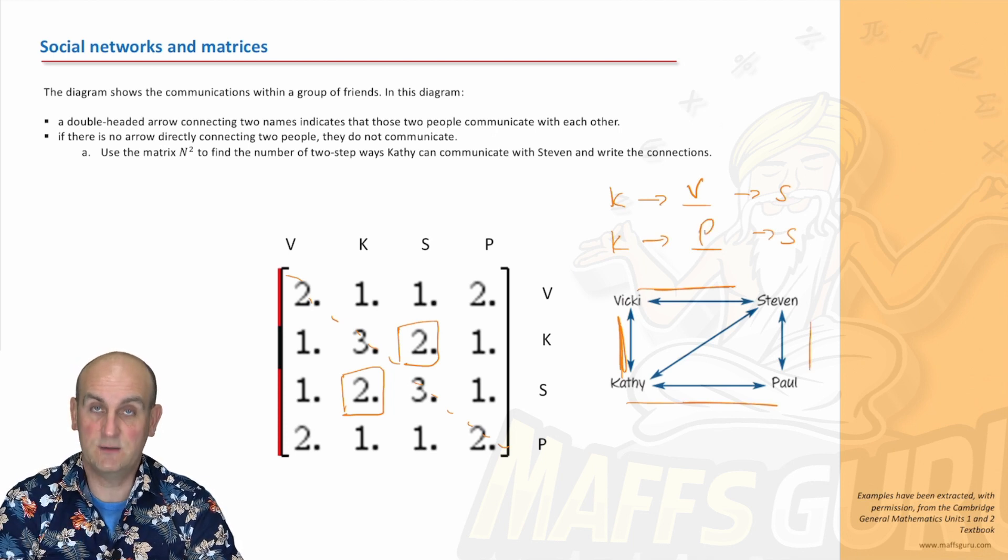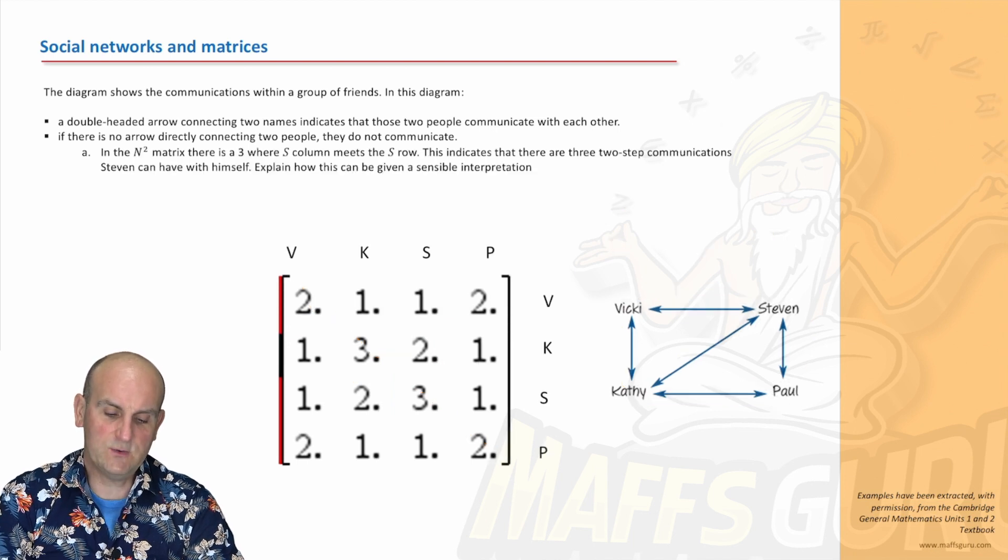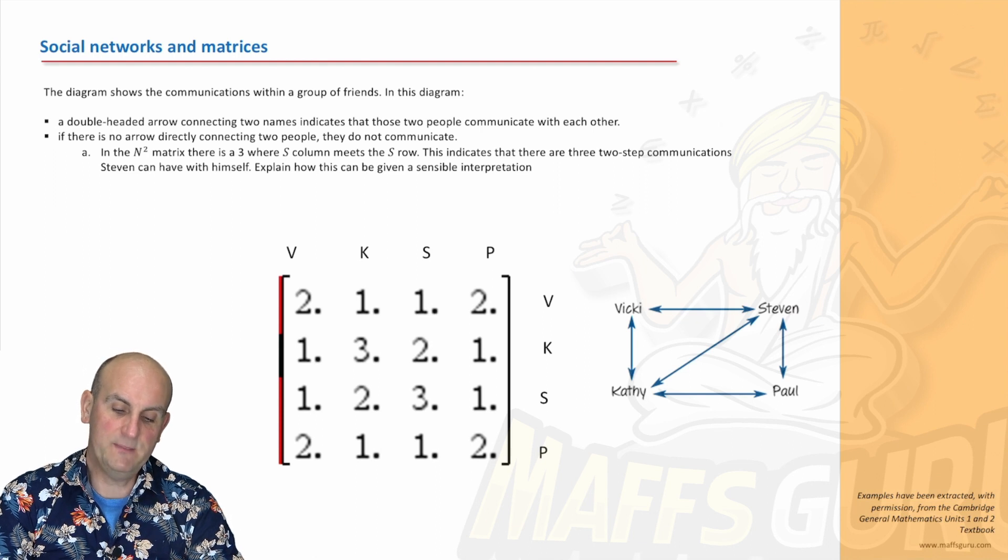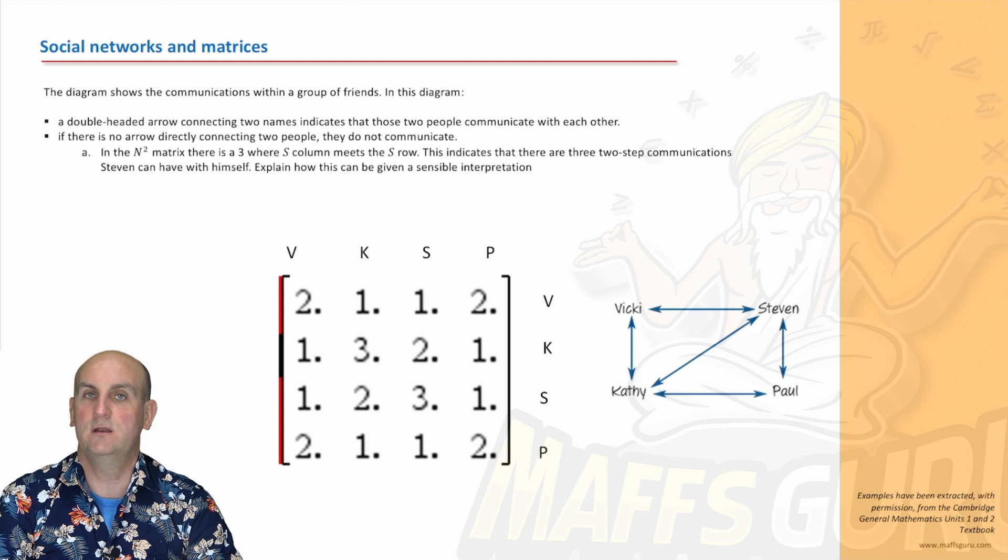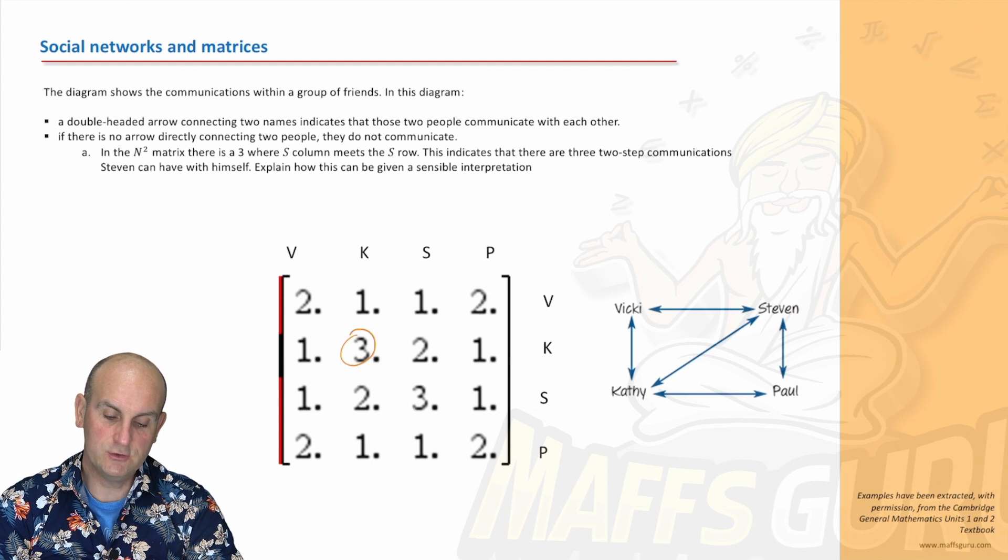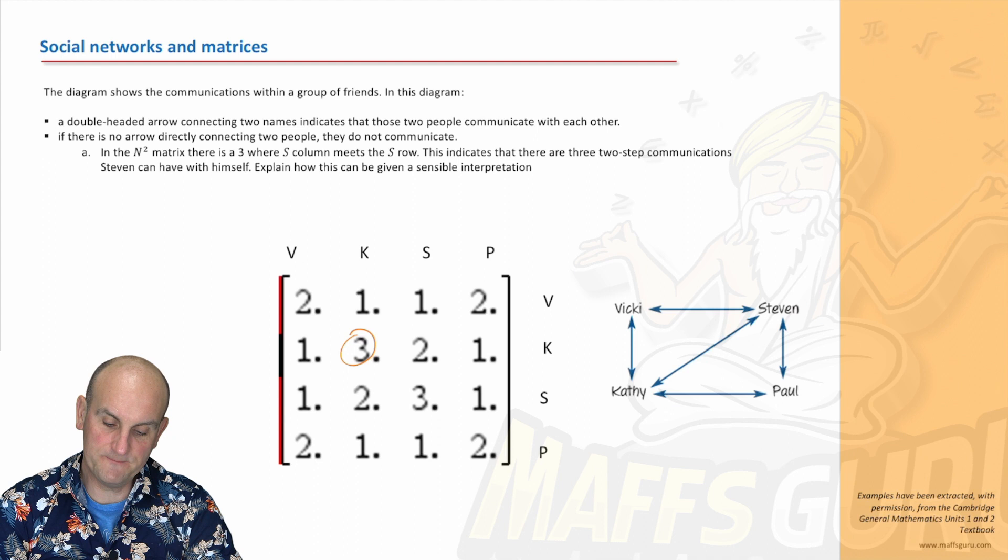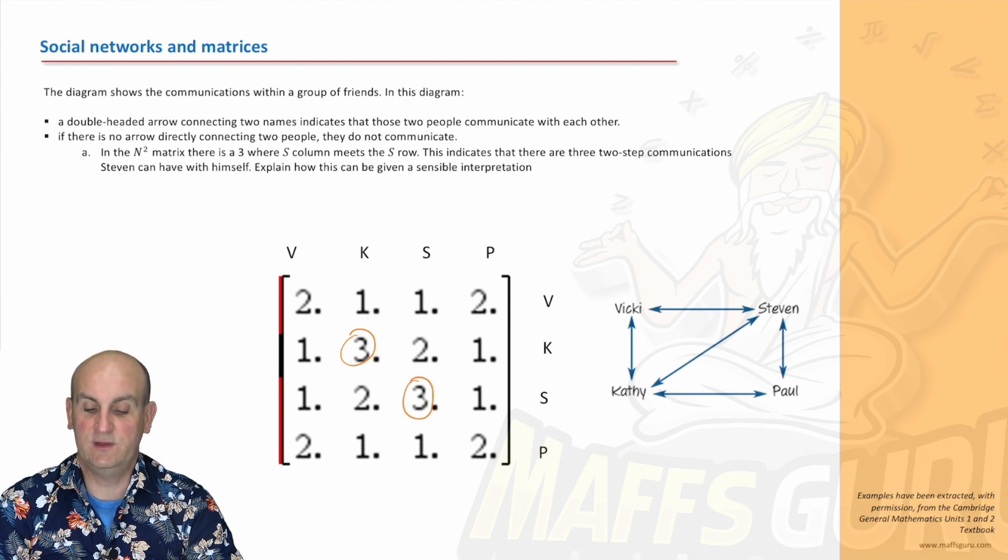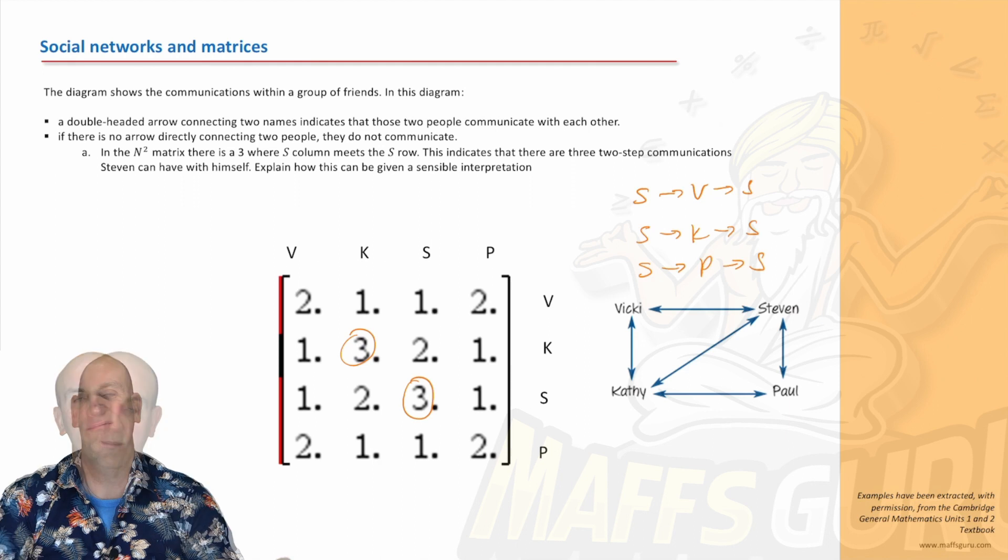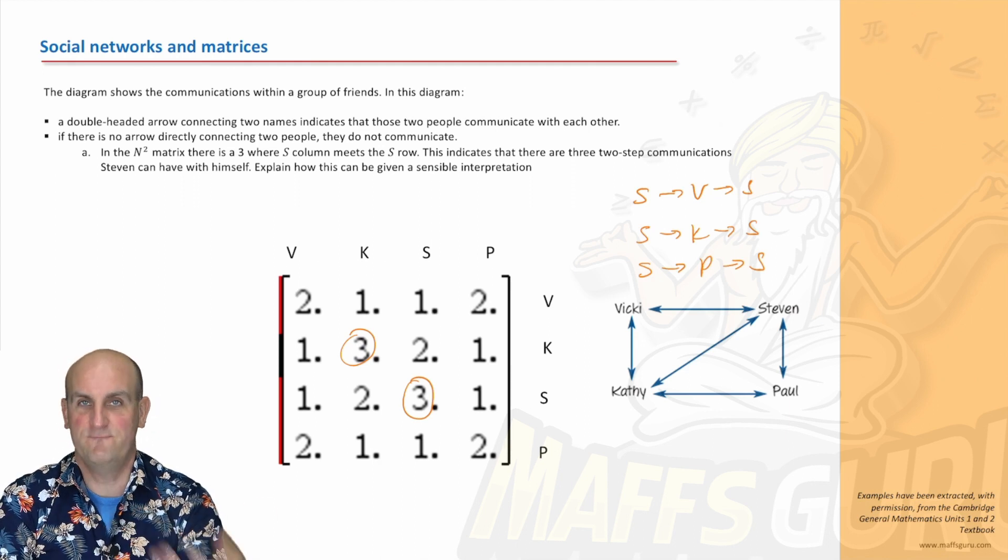Understanding these things is going to make your life so much easier next year. If in the N squared matrix there is a three where column S meets, this indicates there are three two-step communications Stephen can have with himself. Explain how this can be given a sensible interpretation. This value of three means there are three ways of Stephen to communicate back to himself with one other person. Stephen to Vicky to Stephen, Stephen to Cathy to Stephen, and Stephen to Paul to Stephen.